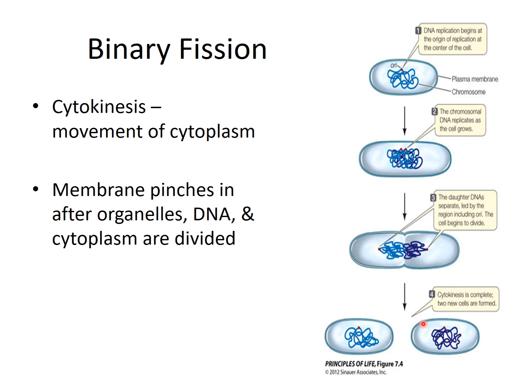We've gone over asexual and sexual reproduction, the benefits of both, different sexual life cycles, and how prokaryotes go through binary fission. In the next series, we're going to look at mitosis and meiosis and see how eukaryotes handle cell division. Hope you enjoyed — have a good evening.